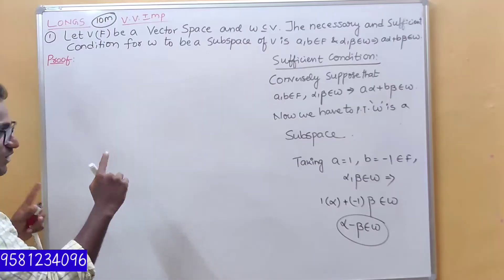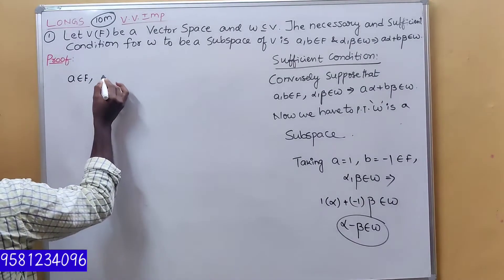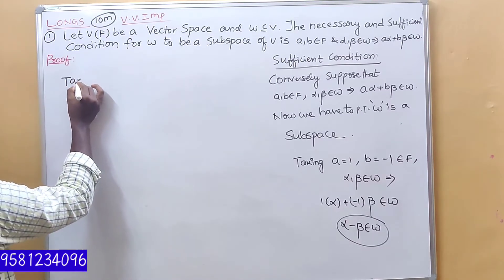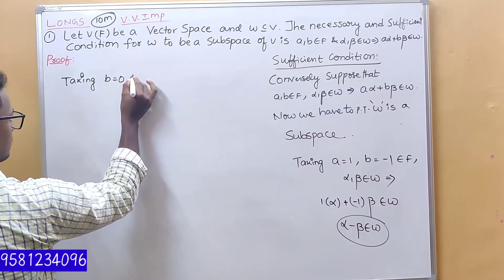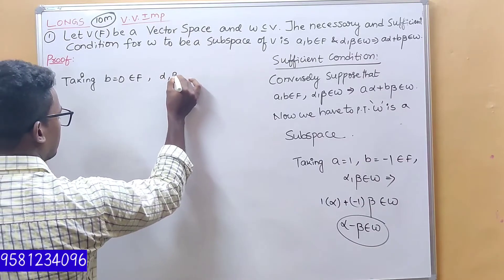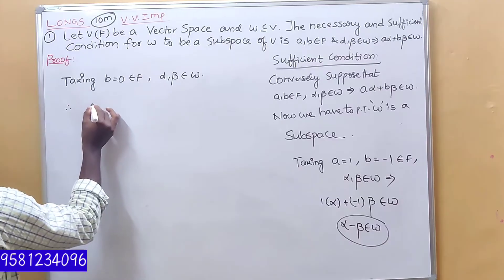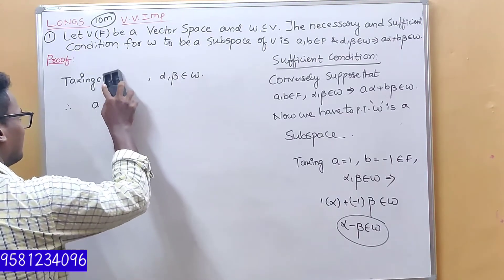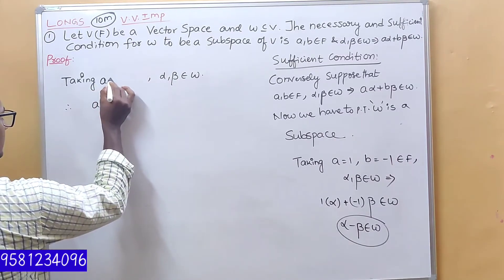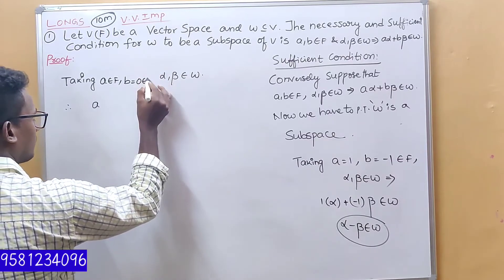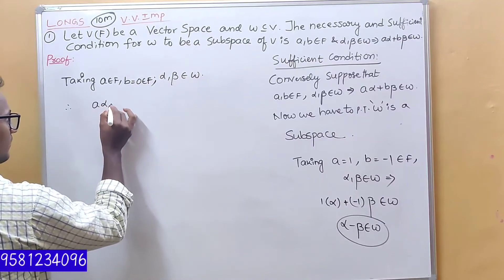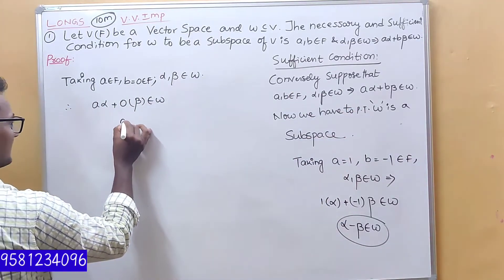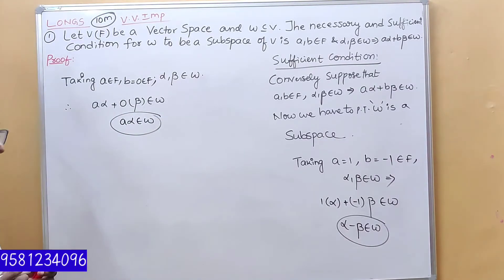You identify as 1 or 0. A belongs to F. Taking B equal to 0. Alpha and beta belong to W. A·alpha belongs to W. A is equal to 0, A is equal to 0. Suppose that A belongs to W — condition number 2 is satisfied. Why are these two conditions needed?